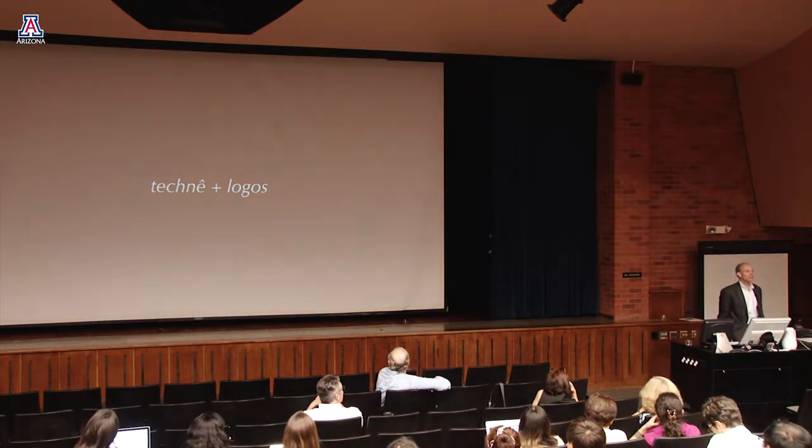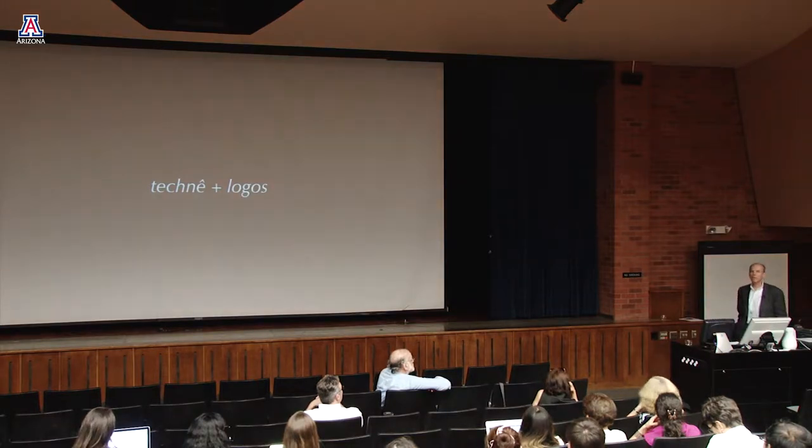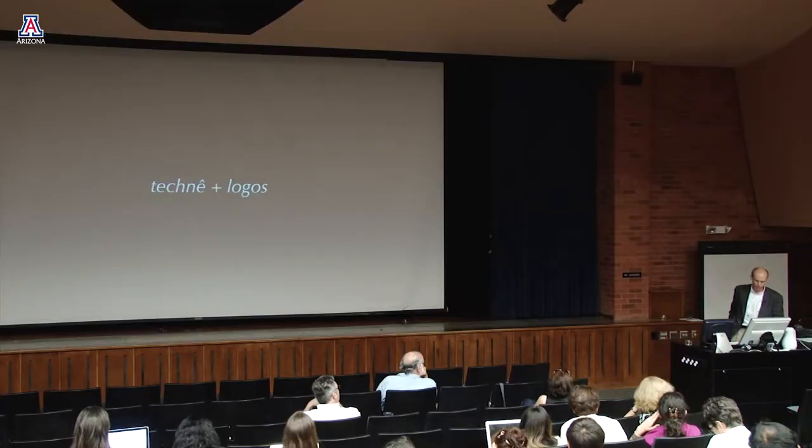I want to start by talking about some of the ways that technology and language are related. There are two principal connections. One is etymological: going back to the Greek, techne has to do with art, craft, and know-how; logos means words or discourse. So technologia originally referred to the systematic treatment of grammar. It wasn't until the mid-19th century that technology came to mean science and mechanical and industrial arts — about the transformation of raw materials into finished products.